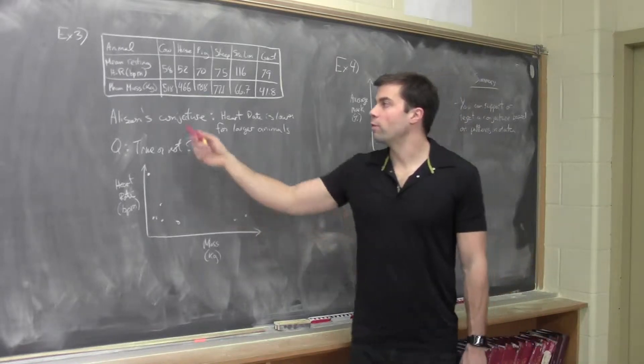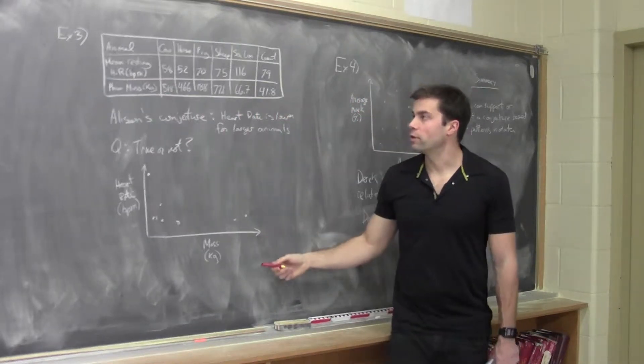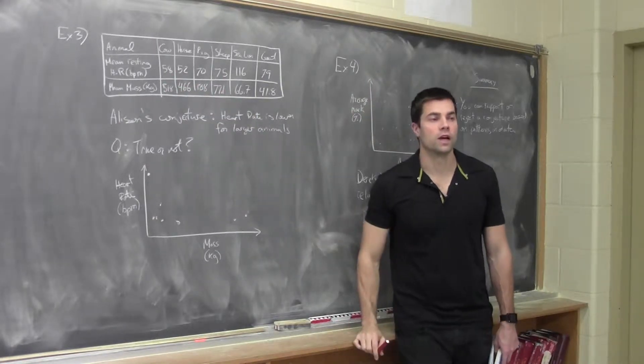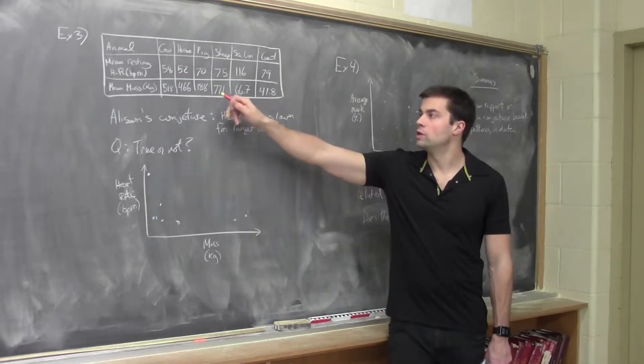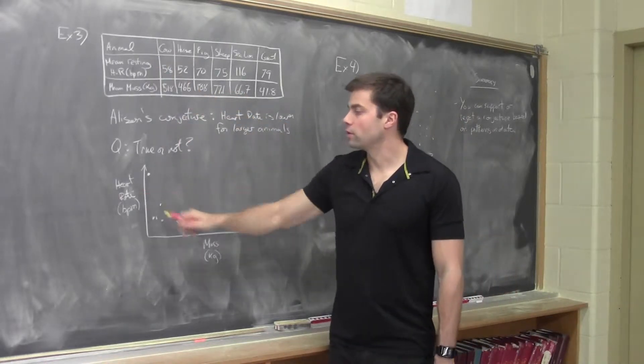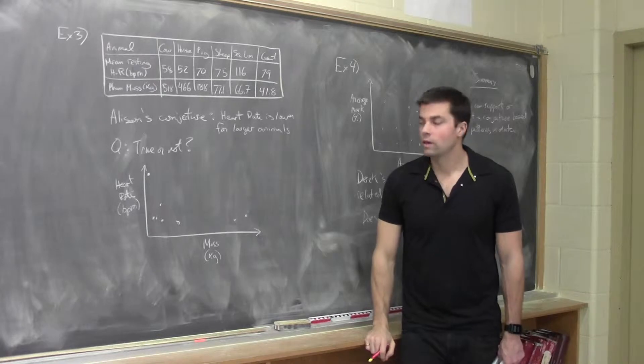So again, our independent variable would be our mass, okay? Because we're measuring the resting heart rate, and we're choosing the animal to test. So choosing the mass would be down here, and then measuring our resting heart rate would be our dependent variable.